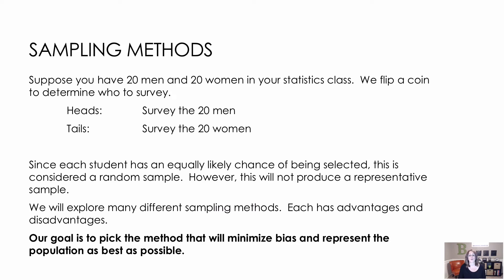We're going to talk about the different ways in which we can choose a random sample, and this is key: we're trying to minimize bias and represent the population as best as possible. There's no one exact way, but just keep in mind that's our goal — minimize bias, represent the population as best we can.